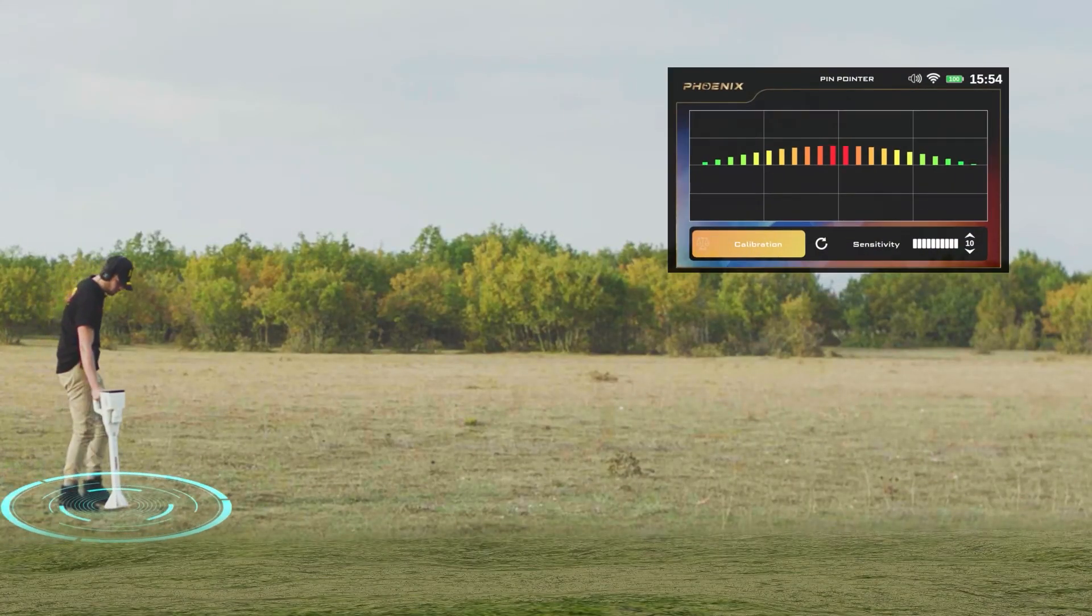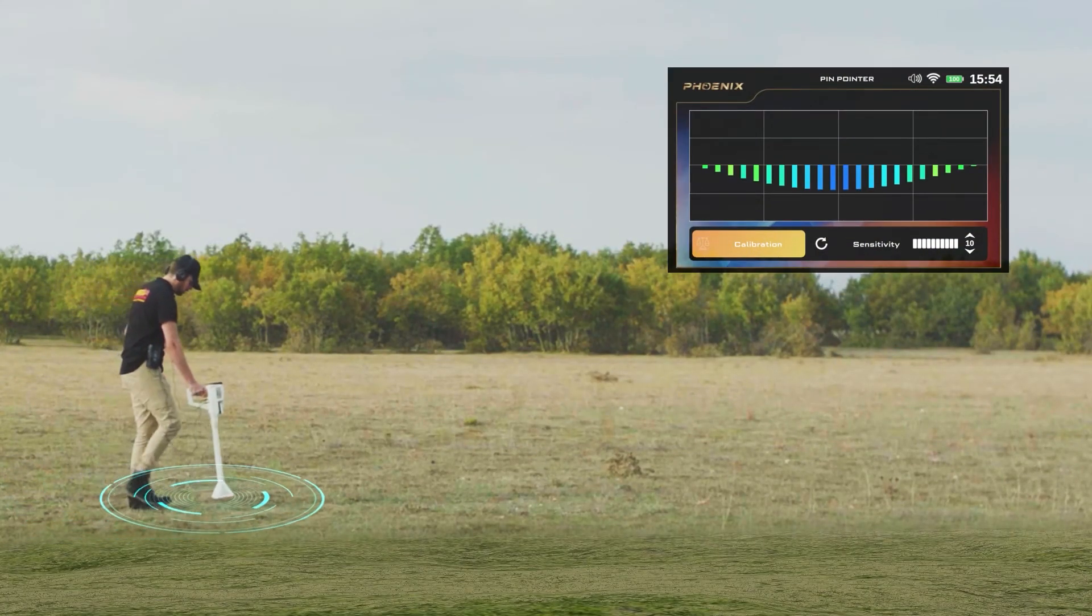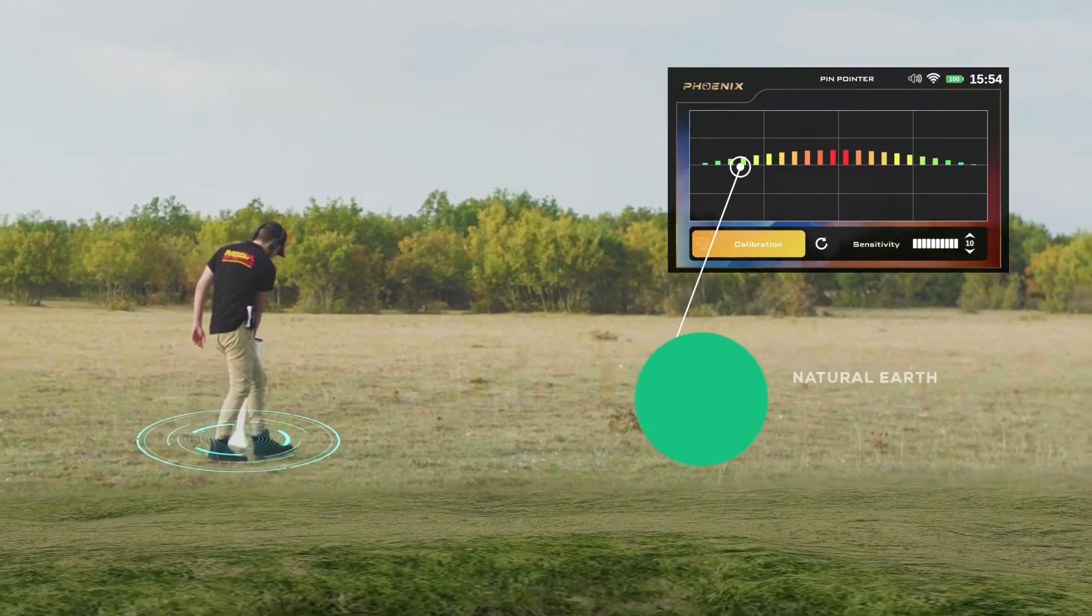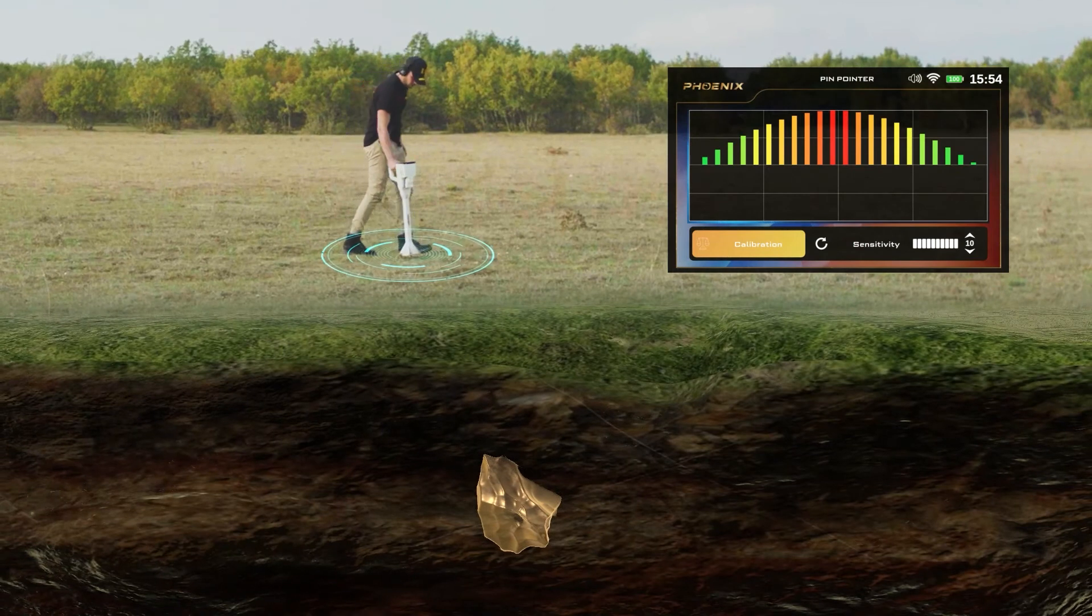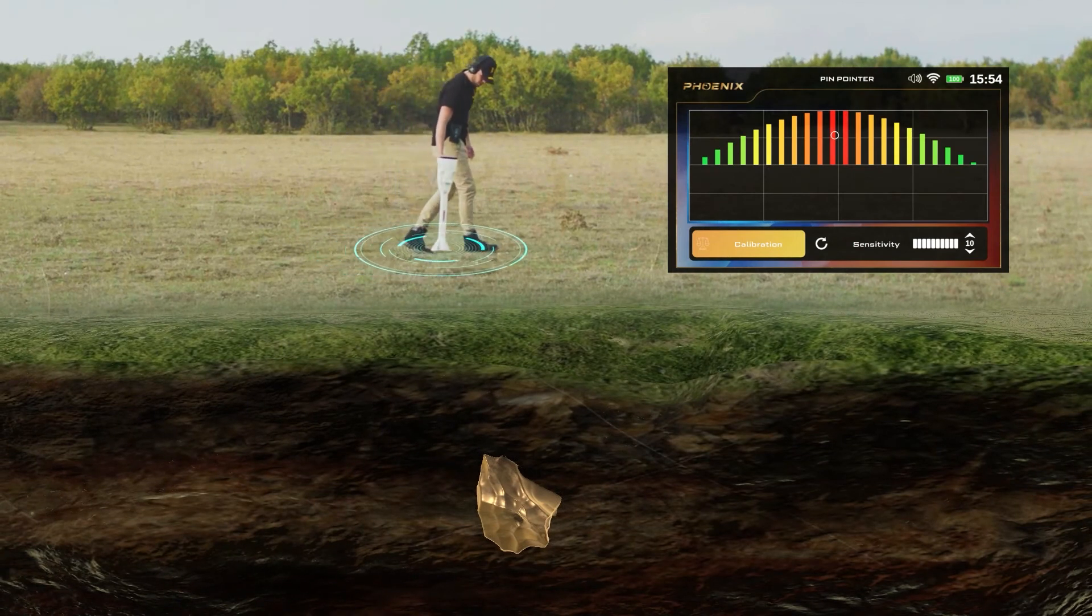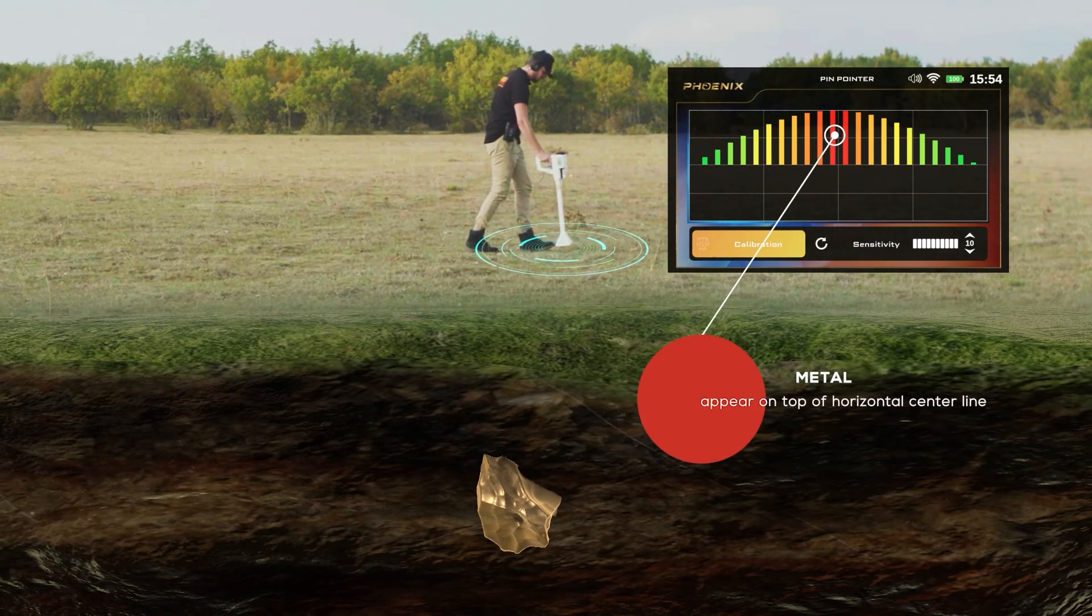On the screen of the device, a bar graph is displayed that appears in green in the case of natural earth. In the case of receiving metal signals, a graph which includes rectangles with different lengths will appear on top of the horizontal center line.